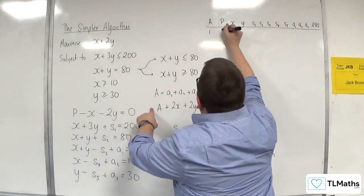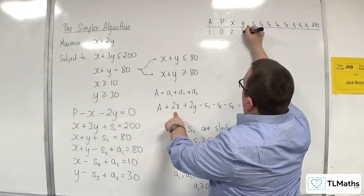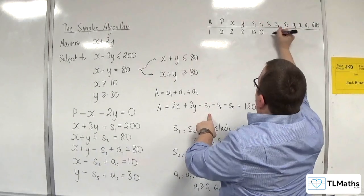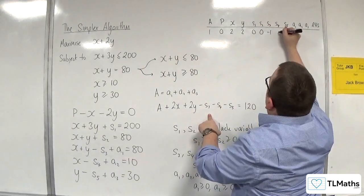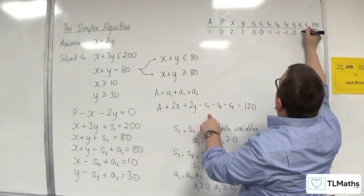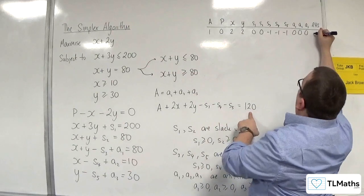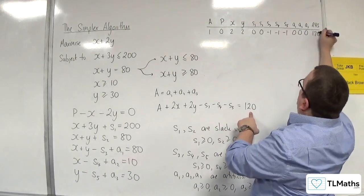For the A row: 1, 0, 2, 2, 0, 0, minus 1, minus 1, minus 1, 0, 0, 0. And the right-hand side is 120.